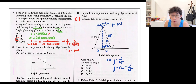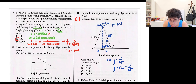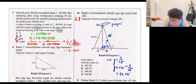I'm going to type cos negative 1, then 7 over 25. You get your answer as 73.74 degrees.